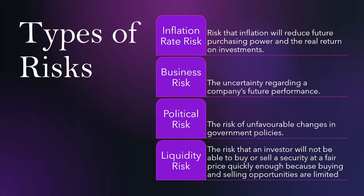Next, we are going to look at some different types of risks. The first is inflation rate risk — the risk that inflation will reduce future purchasing power and the real return on investments. This is really high if you're holding cash because cash doesn't really grow. A savings account might have a 0.1% return, but inflation tends to be around 2%, so the purchasing power of your money decreases over time. Similarly, if you're getting a 7% return in the stock market and inflation is 2%, your real rate of return would only be 5%. There is always inflation rate risk, no matter what.